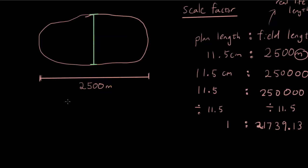So again, I want to write down the formula, plan length to field length. So this length on paper is 5.5 centimeters, but we don't know how long it is in real life. So we got 5.5, but we don't know how long it is in real life. So how will we find it?